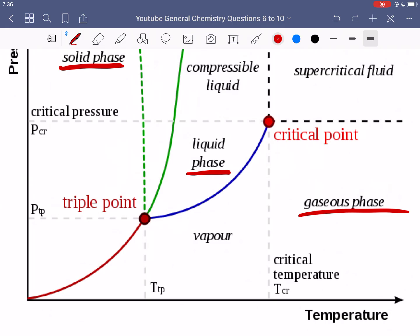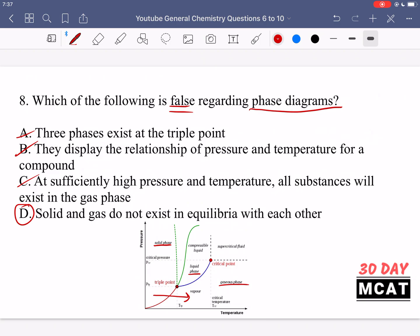And option D is the one which is incorrect. It's saying solid and gas do not exist in equilibrium with each other, but no, they do. You're used to thinking, especially when we think about water, as something going from solid to liquid and then afterwards going to gas. However, we can cross over directly from solid to gaseous. If we keep a low pressure and then start increasing the temperature, we can cross directly from solid to gas rather than going through the liquid intermediate. So option D is a false statement about phase diagrams.